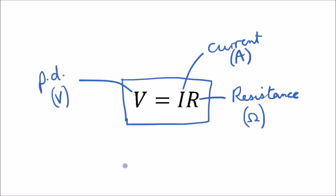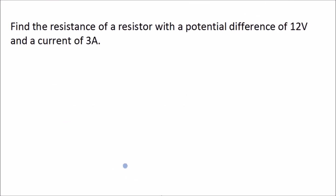Let's have a go at a question. Find the resistance of a resistor with a potential difference of 12 volts and a current of 3 amps. If you'd like to have a go at this yourself, pause the video right now. Otherwise, I'll show you the answer.